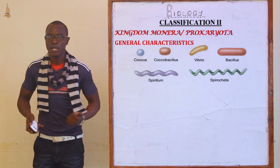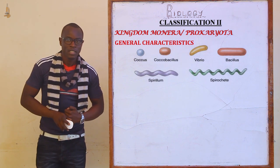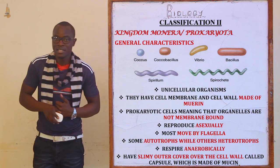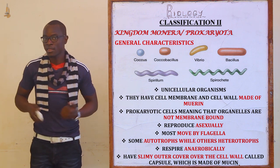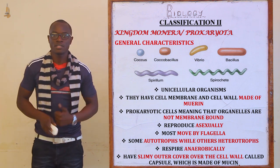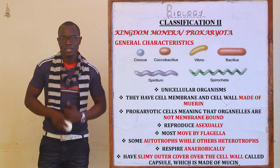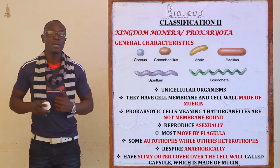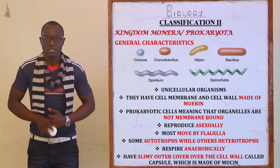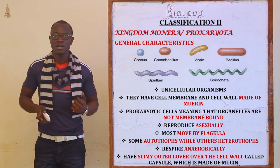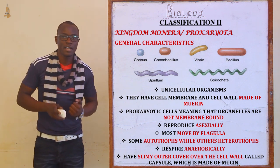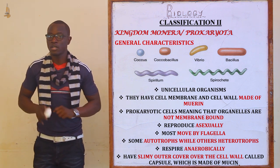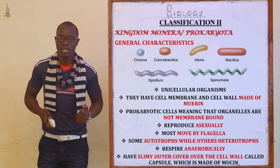Let's look at the general characteristics of Kingdom Monera or Kingdom Prokaryota. Remember, general characteristics means they may share these with other organisms. First, these organisms are unicellular. They have a cell membrane and a cell wall mainly made up of murein. These cells are prokaryotic, meaning their nucleus is not membrane-bound — the nucleus does not have a nuclear membrane. Their organelles also lack membranes.